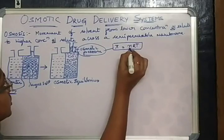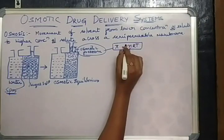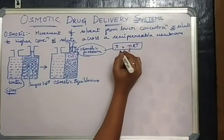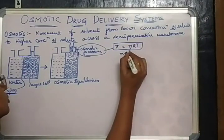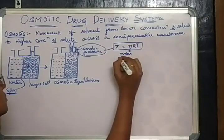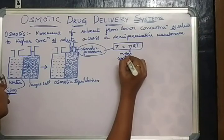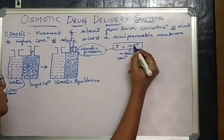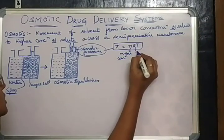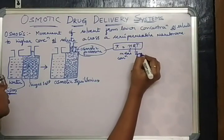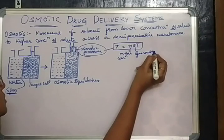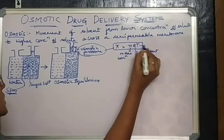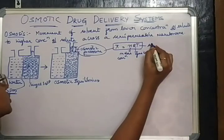Pi is osmotic pressure. N is the molar concentration of sugar solution. R is the gas constant. T is the absolute temperature.